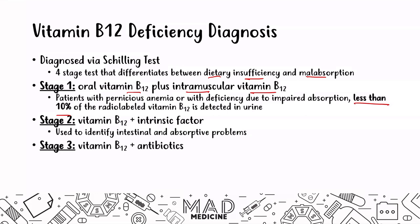Stage three is when you give vitamin B12 with antibiotics. You give antibiotics to identify if the patient has any bacterial overgrowth. If so, the antibiotics will knock out the bacterial overgrowth, allowing vitamin B12 to be absorbed. If there is no bacterial overgrowth and vitamin B12 is still not absorbed, that tells you there is an absorption issue in the ileum itself, rather than bacteria blocking absorption.